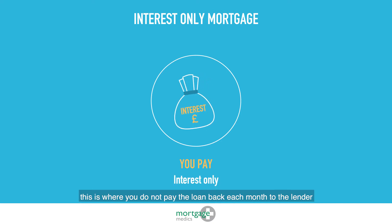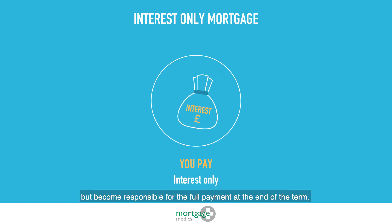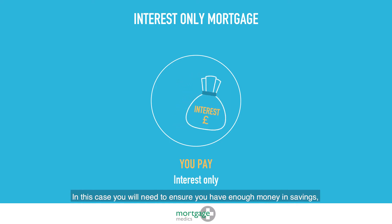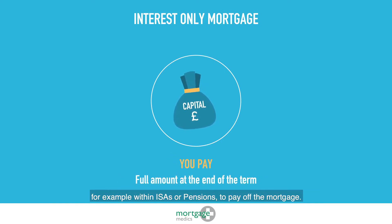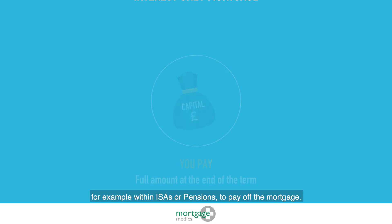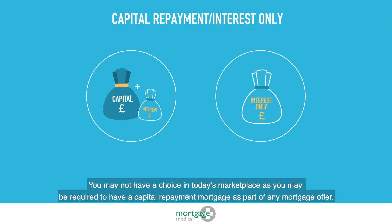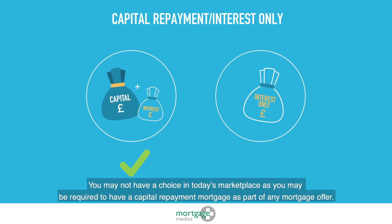There are alternatives known as interest only mortgages. This is where you do not pay the loan back each month to the lender, but become responsible for the full payment at the end of the term. In this case you will need to ensure you have enough money in savings — for example within ISAs or pensions — to pay off the mortgage.